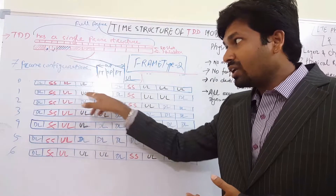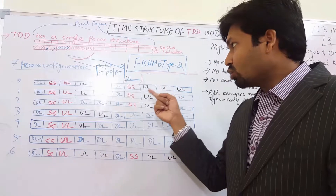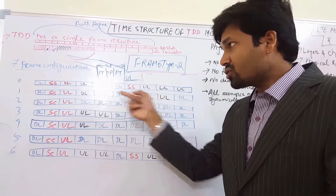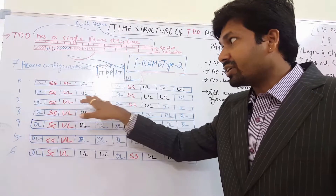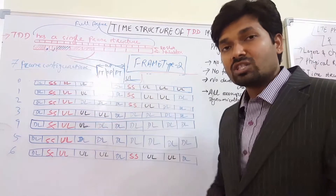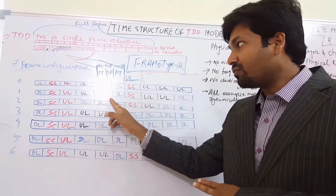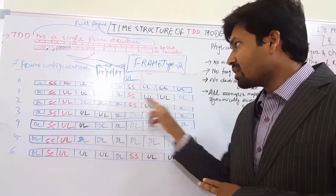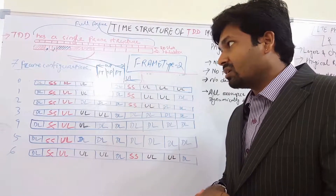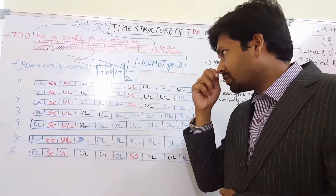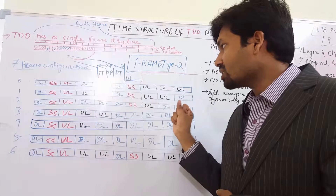From uplink to downlink, we don't need any special subframe — directly from uplink transmission to downlink can happen. Frame configuration type 2 consists of 2 downlink, 2 uplink, and 1 special subframe per half frame. If you look at the second part also: 2 downlink, 2 uplink, and 1 special subframe. So in both the half frame and full frame it is the same — 2 uplink, 2 downlink, and 1 special subframe.